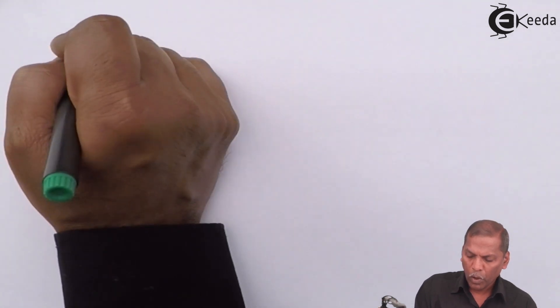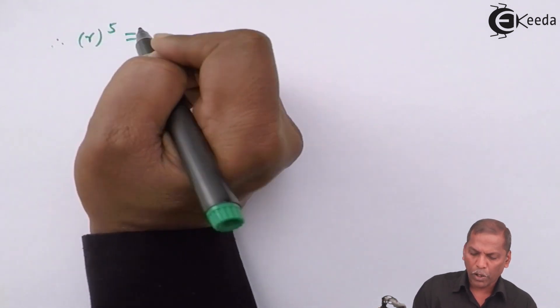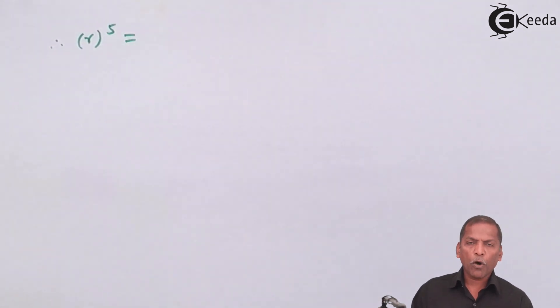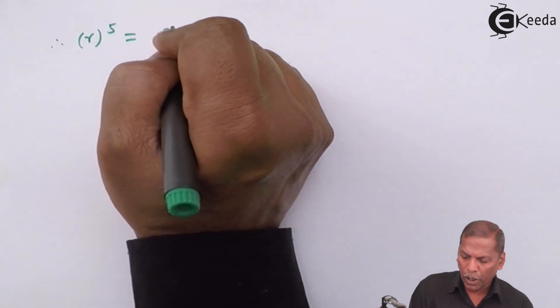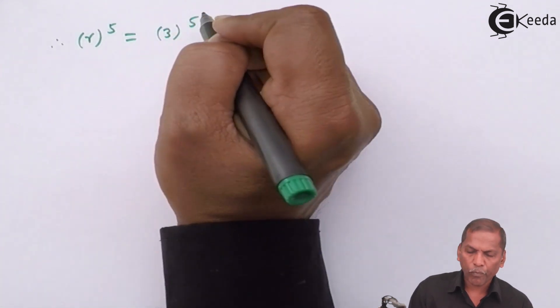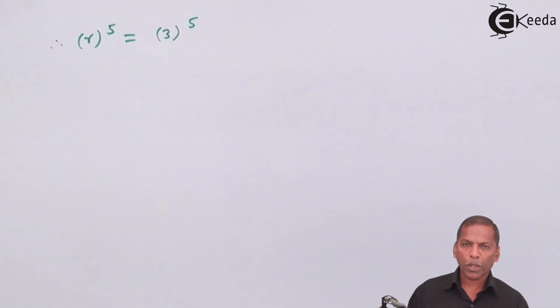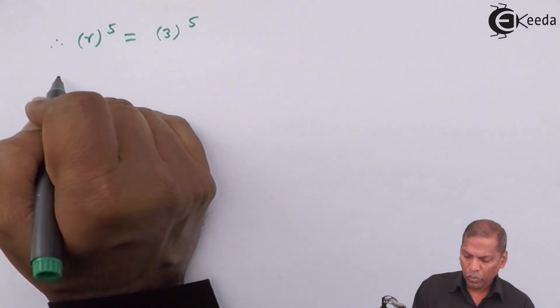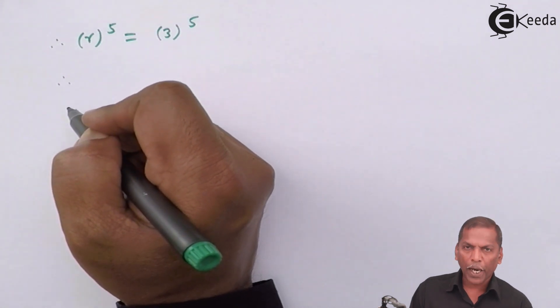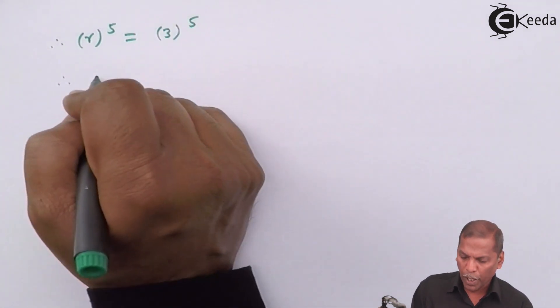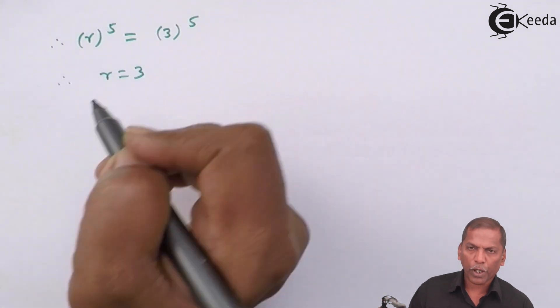Therefore, R raised to 5 equals—if you observe, the number 243 is nothing but 3 raised to 5. It means 3 times 3, five times, gives 243. Since the power is the same, we compare their bases, so we have R equals 3.